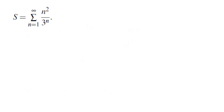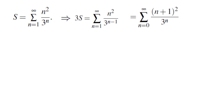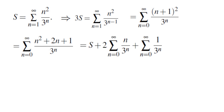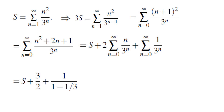Now we move on to the second sum using a similar approach. We let s be the sum, multiply both sides by 3, replace n by n plus 1, expand the numerator, and break up the sums. The first sum is n squared over 3 to the power of n — that's exactly s. The second sum is 2 times the sum of n over 3 to the power of n. Fortunately, we already evaluated this. The last sum is a geometric sum. We evaluated the sum of n over 3 to the power of n to be 3/4; multiplying by 2 gives 3/2. The geometric sum is 1 over (1 minus 1/3), which is 3/2. So we get 3s equals s plus 3/2 plus 3/2, which equals s plus 3. This means s equals 3/2, giving us the answer.